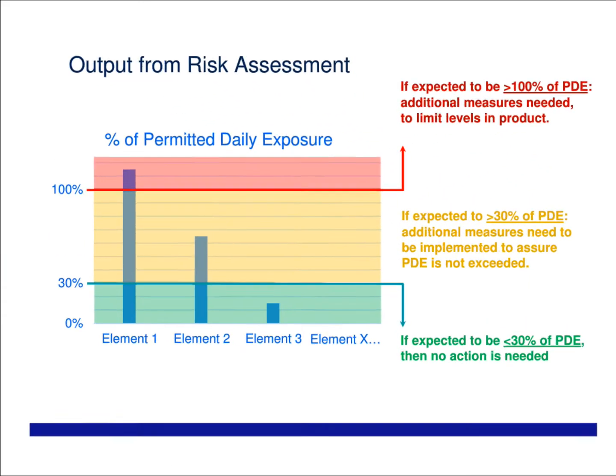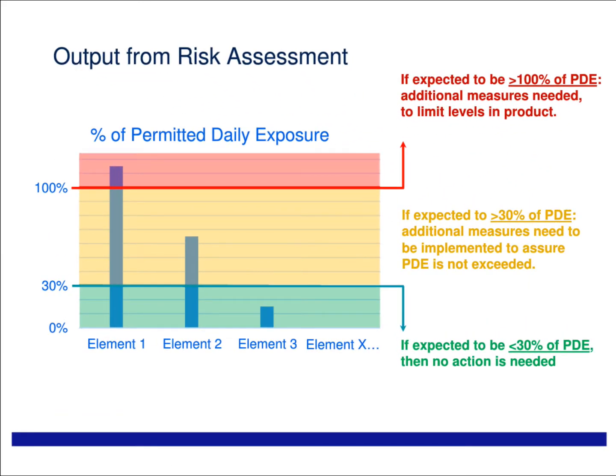The guidance identifies permitted daily exposure (PDE) levels for each element by each route of administration. If your risk assessment identifies you will consistently be within 30% of that limit — the green area — you don't need to do anything. If your risk assessment identifies that you will be above 30% — in the orange area — you need to add additional control measures to make sure you don't go above 100% of the PDE; for example, you might have routine testing built in. But if the levels are expected to be above 100% of the PDE — into the red area — then measures will have to be introduced that reduce that number down to an acceptable level.